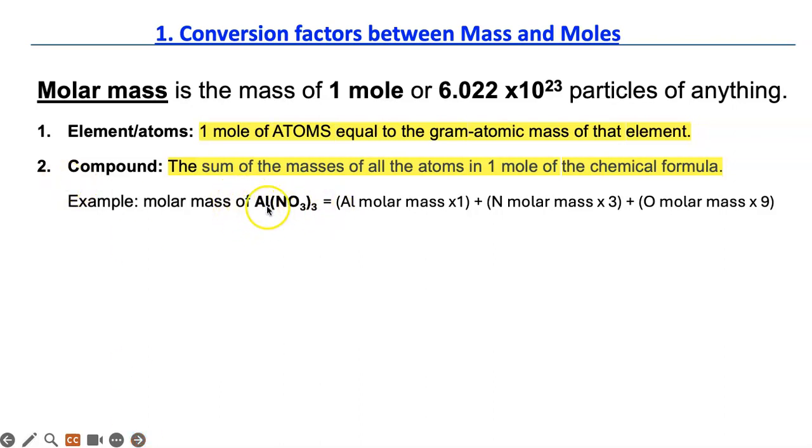So here is aluminum nitrate AlNO3 three times and there is one mole because there is not a coefficient. So the mass of this substance is aluminum molar mass from the periodic table times one. There is only one aluminum and nitrogen times three plus oxygen times three times three is nine.